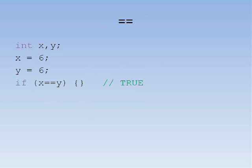Here we see an example of the difference. First, we create two integer variables x and y, and set them both to equal 6. When we test x double equals y, the value will be true.